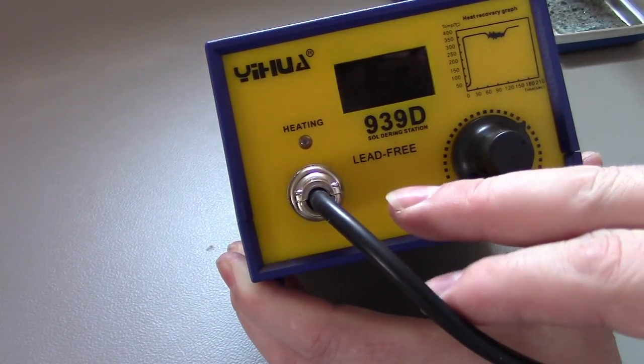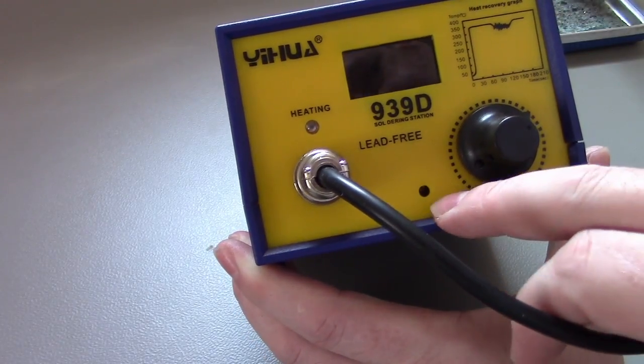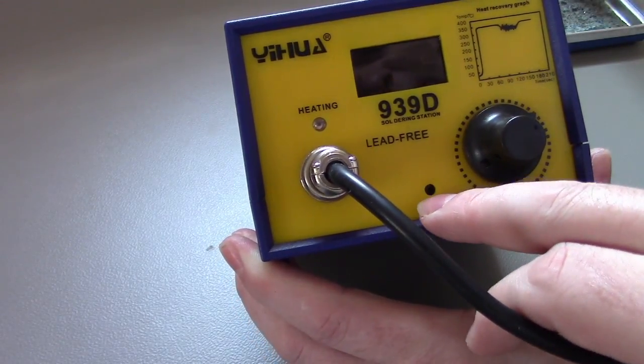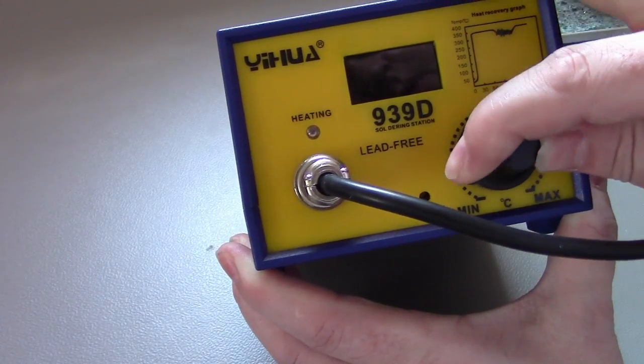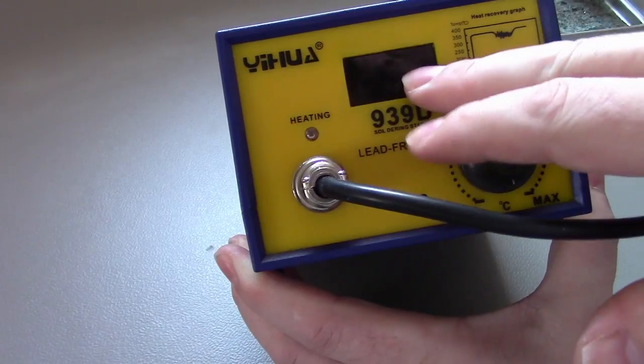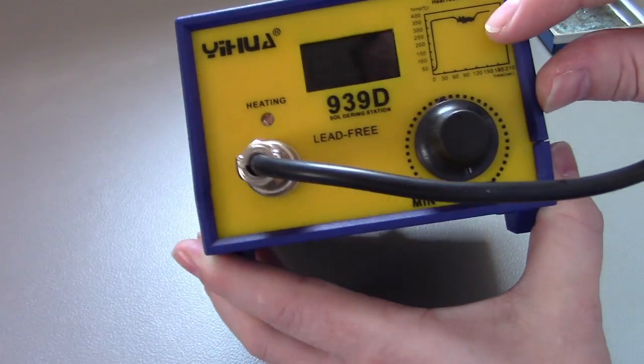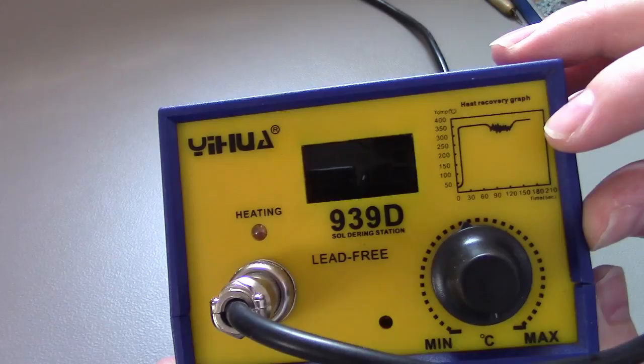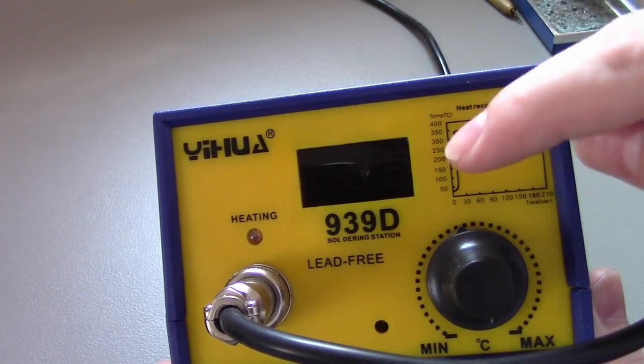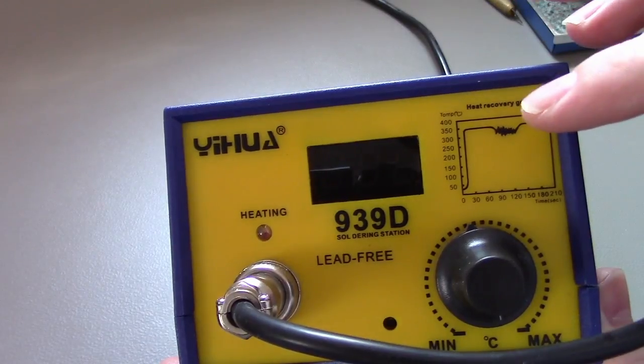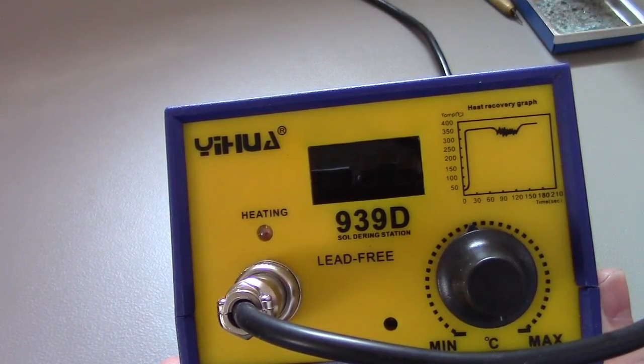It does say it's a lead free one. I believe there's a calibration pot hidden underneath there. You've got your dial here and then you've got your display there as well, and then you have got the heat recovery graph there as well, which just gives you a bit of information about its heat recovery over time at certain temperatures there.